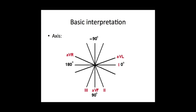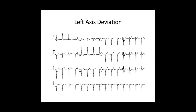Going back to the diagram: if you go across the positive part of lead I on the x-axis and the negative part of AVF, that will place you in the upper right-hand quadrant, which is left axis deviation. This is quite difficult to get your head around, so I suggest you look at several ECGs alongside this diagram. There are other ways of doing it — looking at leads II and III — but I personally find using leads I and AVF the easiest because it makes the most sense in terms of actually looking at the axis.